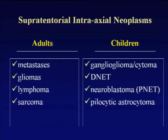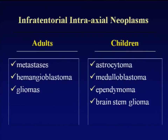In the supratentorial compartment in adults we have metastatic disease, gliomas, lymphomas, and sarcomas; and in children, gangliogliomas, DNET, neuroblastomas, and pilocytic astrocytomas. In the infratentorial compartment, we have metastatic disease as the most common tumor in the posterior fossa, hemangioblastoma in adults, and gliomas — and in children, a totally different histology.